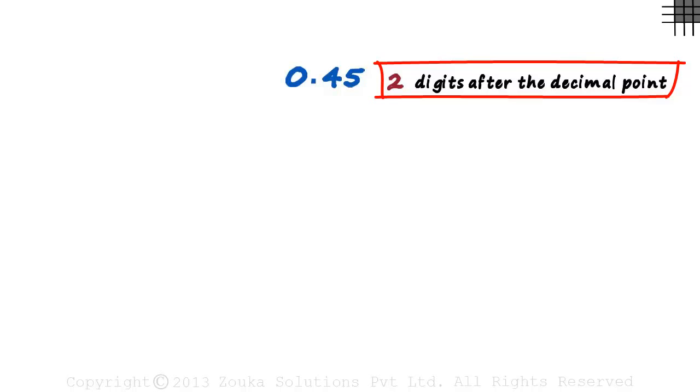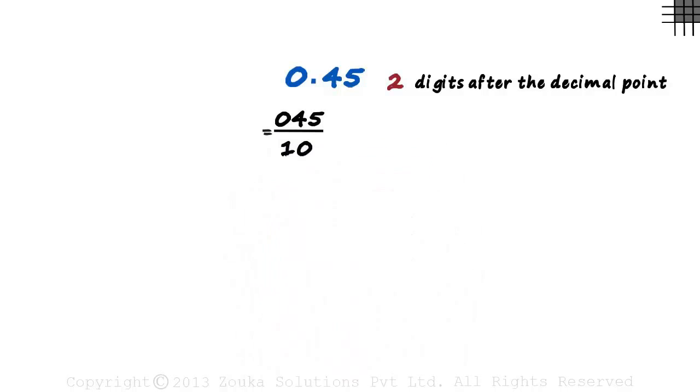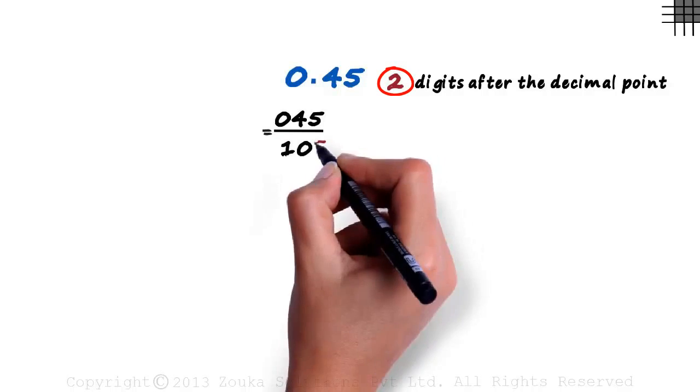Once we find this, we write the number without the decimal. In this case, it's 045. We write it without the decimal point and divide it by some power of 10. And what will be the power of this 10 in the denominator? Yes, it will be the number of digits after the decimal point, which is 2 in this case.